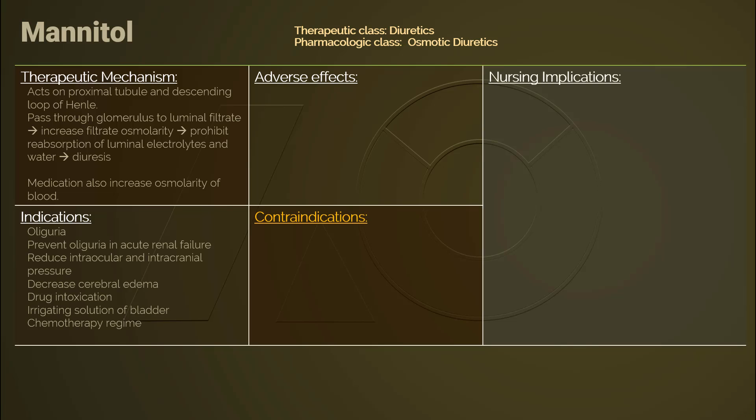Mannitol can be used to treat oliguria and can prevent oliguria in acute renal failure. It is also used to reduce intraocular and intracranial pressure. Furthermore, mannitol can decrease cerebral edema and promote diuresis in cases of drug intoxication. Lastly, it is used to irrigate the bladder during transurethral surgeries.